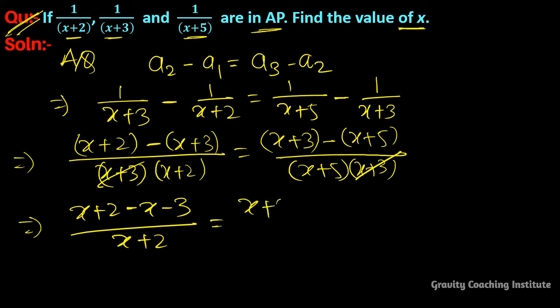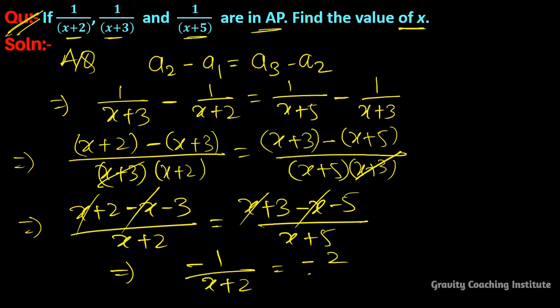This gives x plus 2 minus x minus 3 upon x plus 2 times x plus 3 equals x plus 3 minus x minus 5 upon x plus 5 times x plus 3. So here x and x cancel, giving minus 1 upon x plus 2 equals minus 2 upon x plus 5.